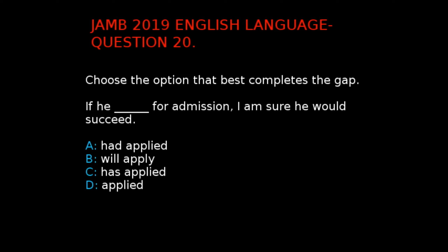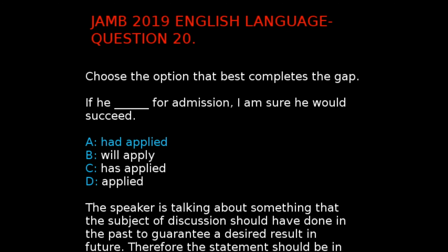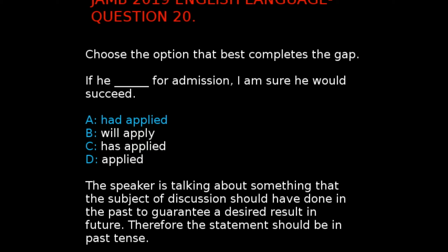Jan 2019 English Language Question 20. The question says, choose the option that best completes the gap: 'If he dash for admission, I am sure he would succeed.' The options are: A. Had applied, B. Will apply, C. Has applied, D. Applied. The correct answer is A. Had applied, because the speaker is talking about something a subject should have done in the past to guarantee a desired result. Therefore, the statement should be in past tense: had applied.